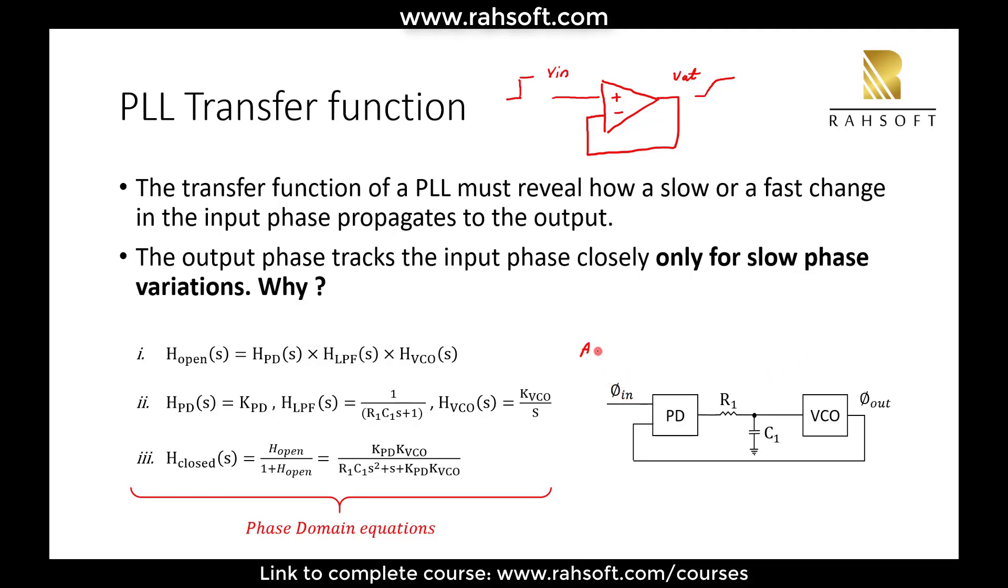For example, if I can write the input like this: a cosine omega t plus phi in of t, the phase changes. So I'm going to apply this step here and I will see how this phi out tracks this. So at the output I'm going to have a cosine omega t plus phi out of t. So I want to see this.